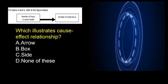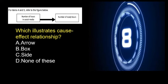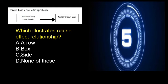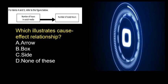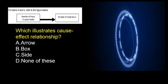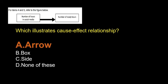For items 4 and 5, refer to the illustration shown. Question 4: Which illustrates a cause-effect relationship? A, arrow; B, box; C, side; D, line. The answer is letter A, arrow.